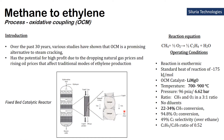My name is Kaora and I will be presenting on the second reaction pathway, which is the production of ethylene from methane via the oxidative coupling mechanism, OCM. Over the past 30 years, various studies have shown that OCM is a promising alternative to steam cracking that uses naphtha. This is because it has potential for high profit due to dropping natural gas prices and rising oil prices. The reaction equation shows methane and oxygen reacting to produce ethylene and water.